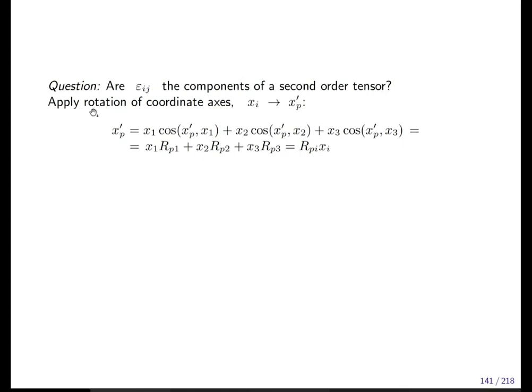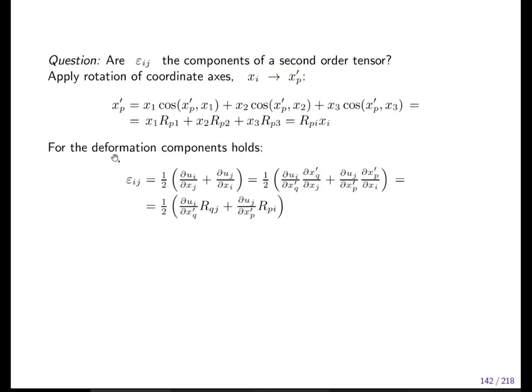So repetition: apply rotation of a coordinate axis from one of the coordinates old to new. We remember that this corresponds to applying the transformation matrix to this vector, R_pi times x_i. This is the operation, this is the long form, this is the very long form, and x_p prime is the new vector after transformation.